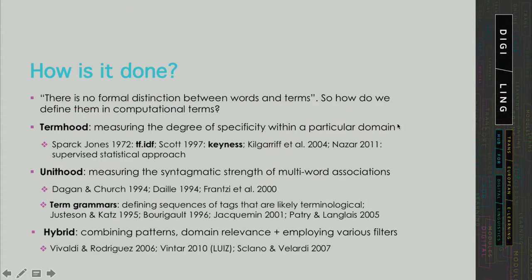Now, if there is no formal distinction between words and terms, as we have seen in previous units, how do we go about designing an algorithm that will distinguish between words and terms in computational terms? Let's now introduce some notions that have been explored and are in part still used for this purpose.